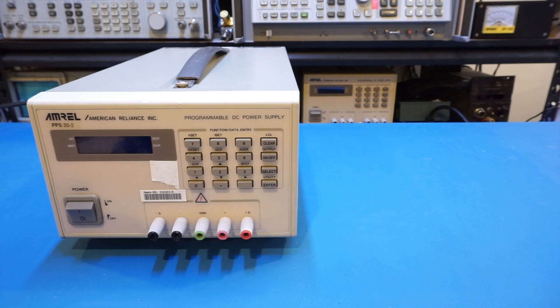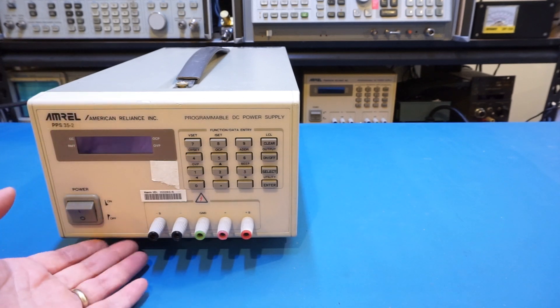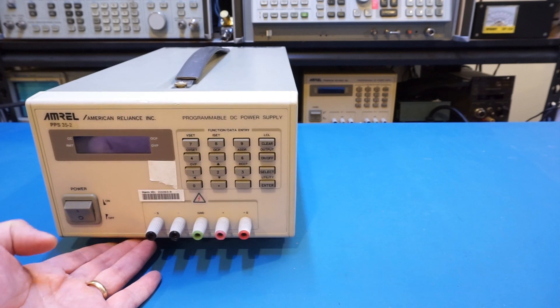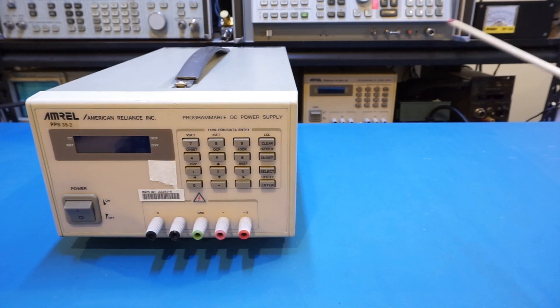Interestingly enough, this one is only a single channel power supply and the maximum output power is only 70 watts when output voltage is 35 volts and current is at 2 amps. But nevertheless it's quite heavy. In fact, it feels like it is about the same weight as the dual channel one back there, and that one has two channels with each channel capable of delivering 70 watts each.